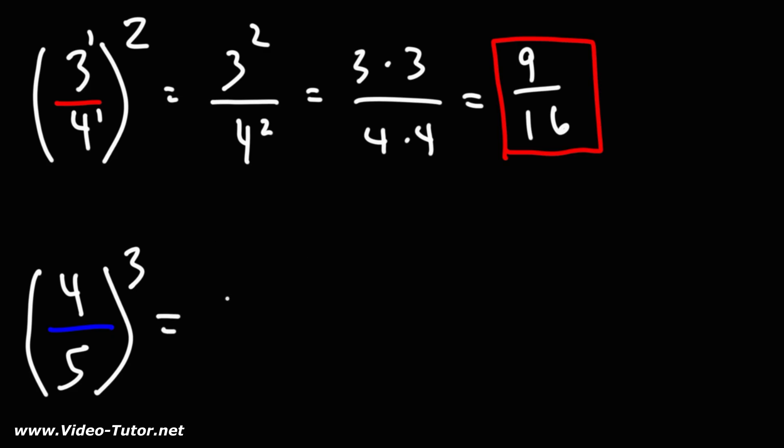Now we could do the same for the other problem. We could distribute this exponent to both numbers. So it's going to be 4 to the third over 5 to the third. 4 cubed is 4 times 4 times 4. 5 cubed, we're multiplying 3 fives together.